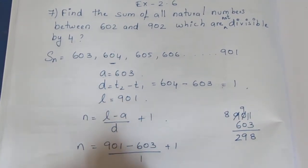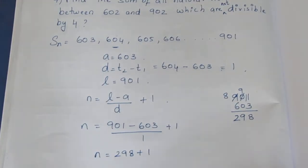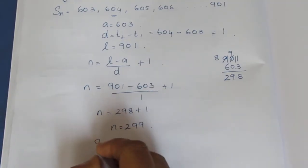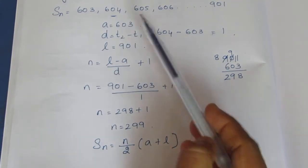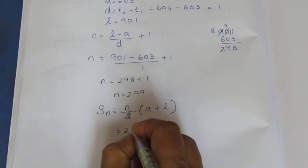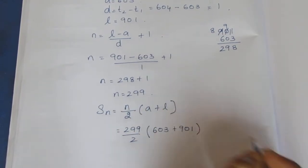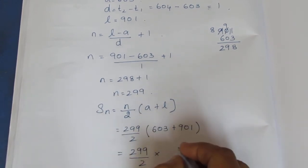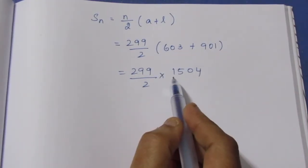N is equal to 298 plus 1, so N is 299. The sum formula is S equals N by 2 into A plus L. A is 603, L is 901. So S equals 299 by 2 into 603 plus 901, which gives 299 by 2 into 1504. Adding 603 and 901 gives 1504.